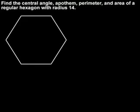Let's start this problem by drawing a picture of a regular hexagon with a radius of 14. Note that a hexagon has 6 sides and the radius is a segment that joins the center of the hexagon to a vertex.